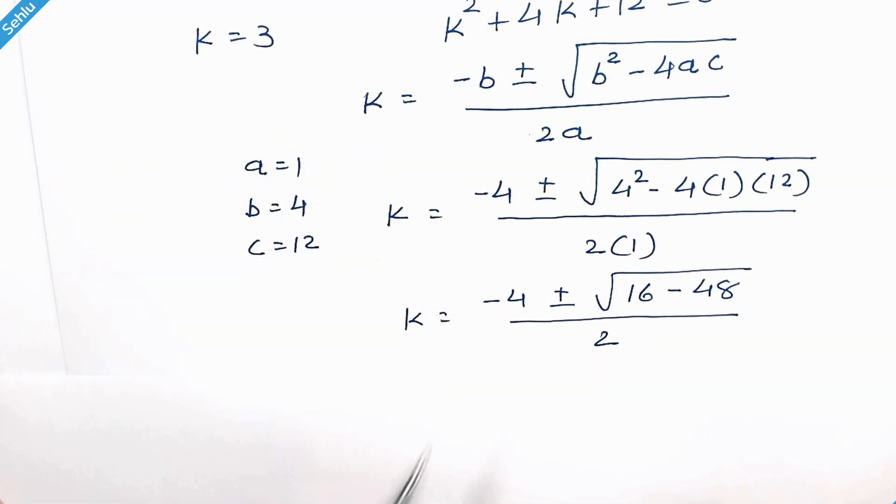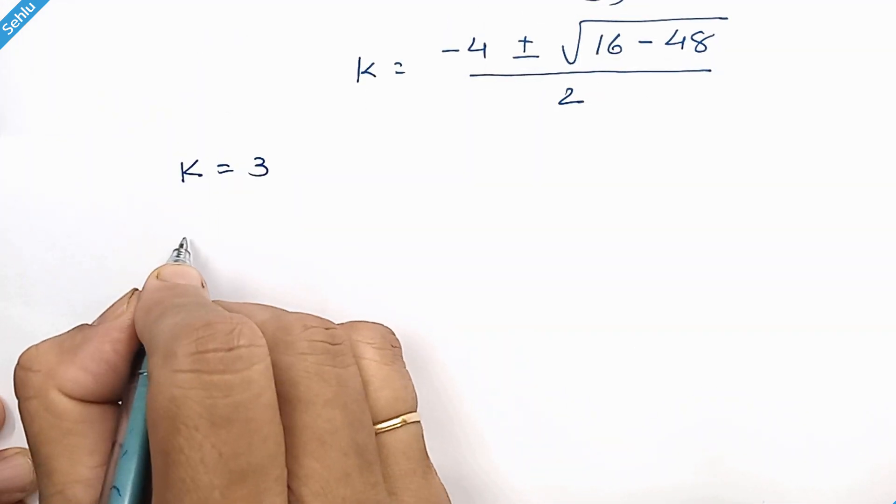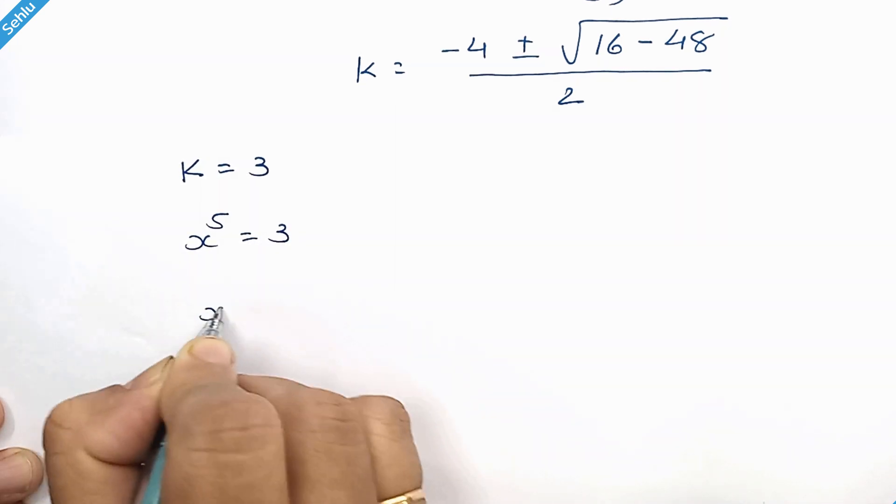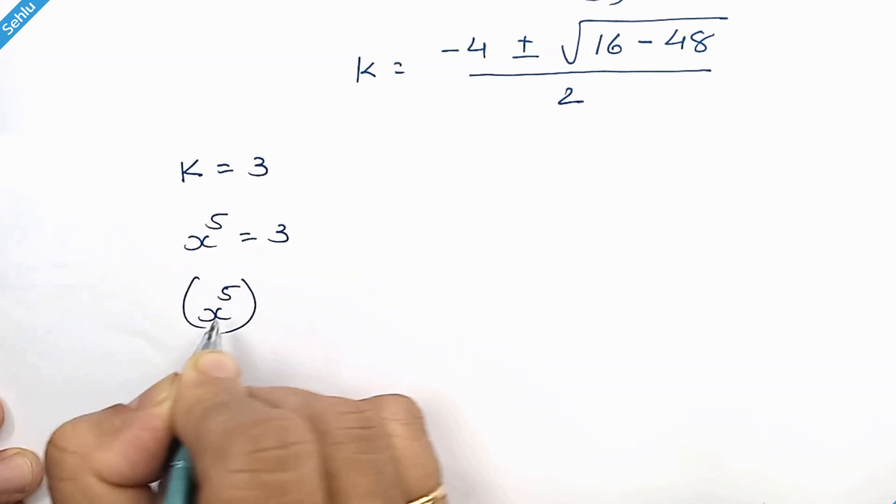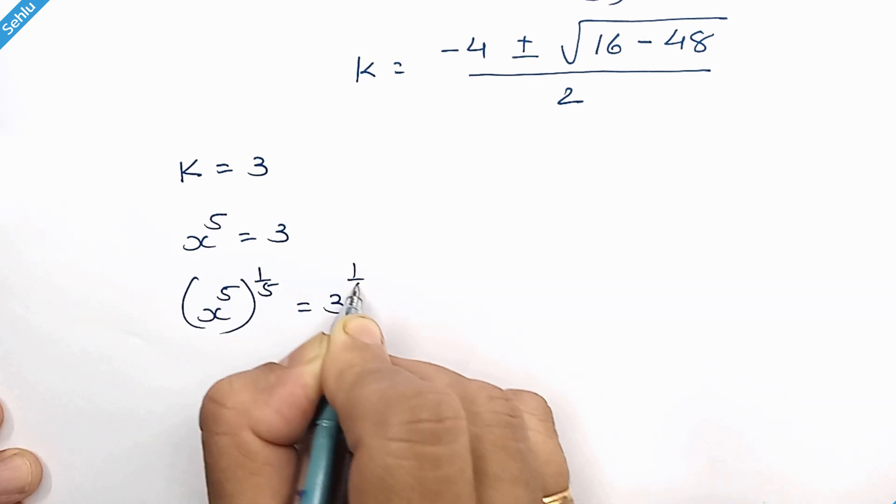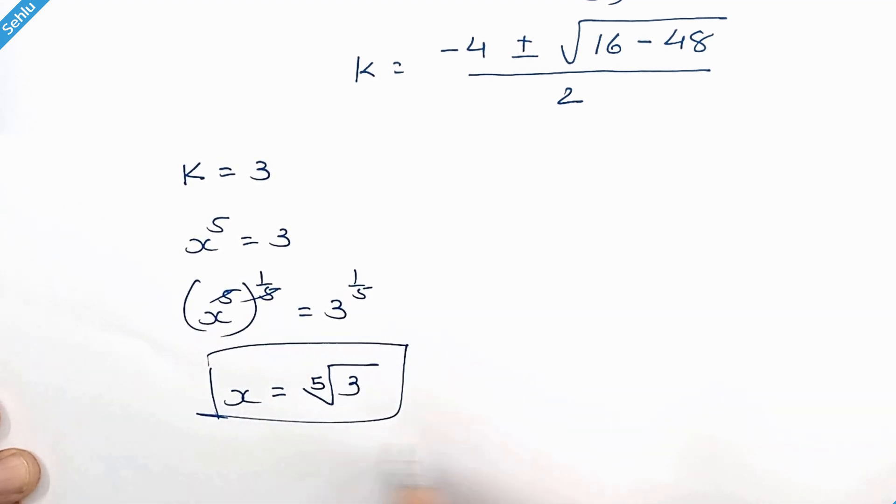Now k is equal to 3. k is x to the power 5. Raising 1 over 5 to both sides, so these two get cancelled out. So we have x is equal to, this can be written as fifth root of 3, and this is the answer.